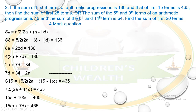Simplifying further: 4 × (2a + 7d) = 136, so 8a + 28d = 136. Dividing through, we get 2a + 7d = 34, meaning 7d = 34 - 2a. We will call this Equation 1.